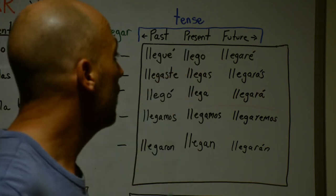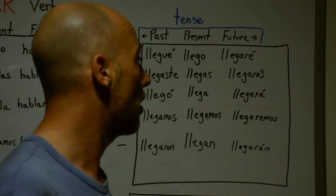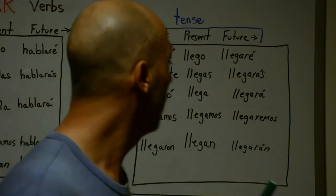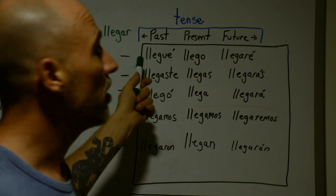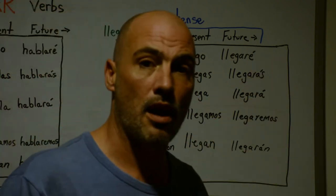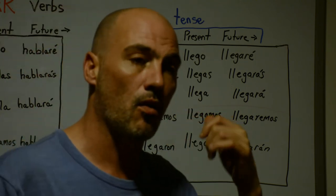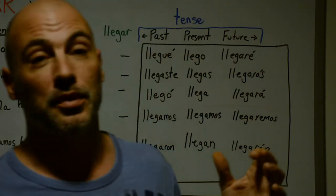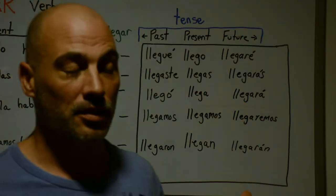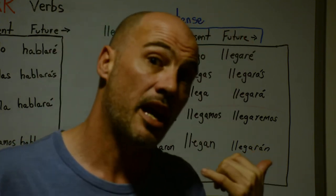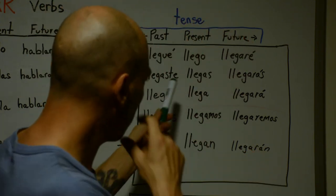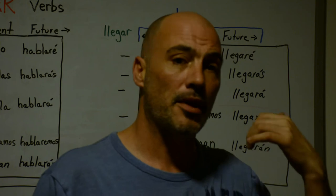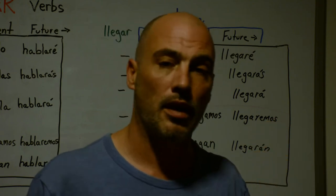For llegar in the present: 'I arrive' is llego. In the past — 'I arrived' or 'I have arrived' — is llegué. You call up your friend at the train station and say 'llegué' — I arrived. For the future — 'I will arrive' — is llegaré.